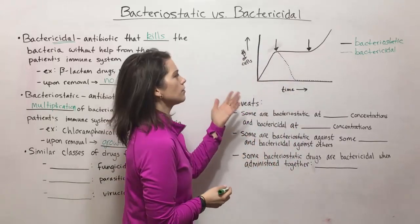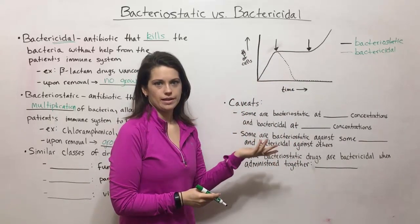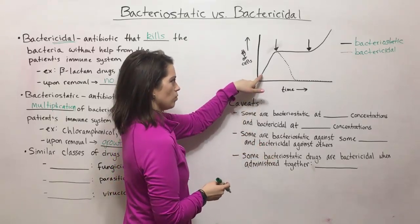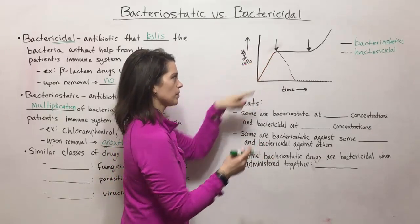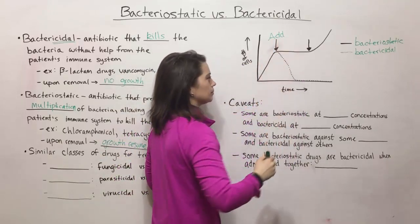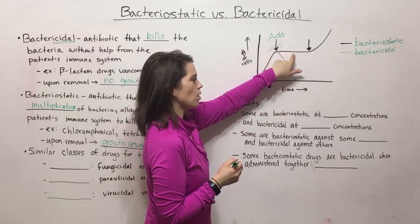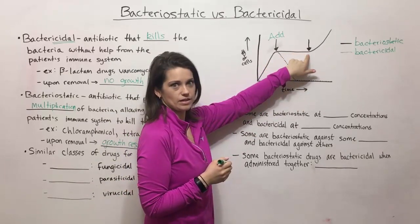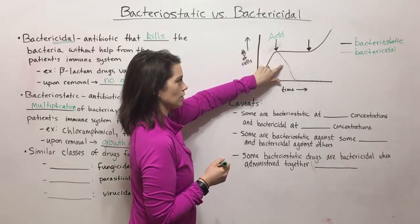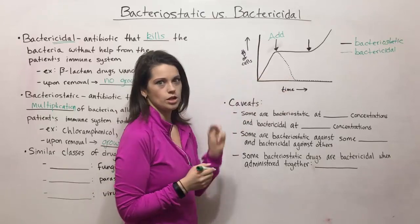If you have bacteria inoculated into a test tube of growth media, they will begin to increase in number. Then if you add a drug — if it's a bacteriostatic drug, that will prevent multiplication of the bacteria without killing them. If it's a bactericidal drug, it will actually kill them, causing the bacterial numbers to fall down.